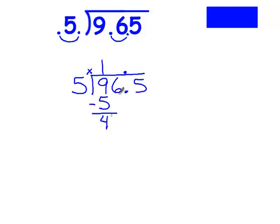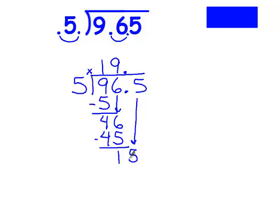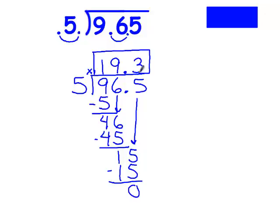1 times 5 is 5. I have 4 left over, and down comes my 6. I can get 9 groups of 5 out of 46. 9 times 5 is 45. I have 1 left over, and down comes my 5. And I can get 3 groups of 5 out of 15. 3 times 5 is 15, and my answer is 19 and 3 tenths.